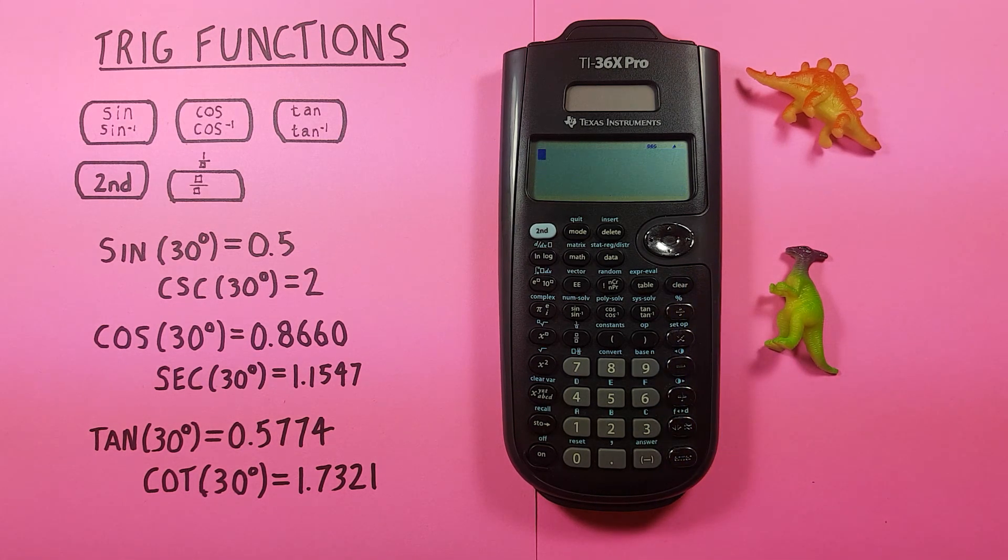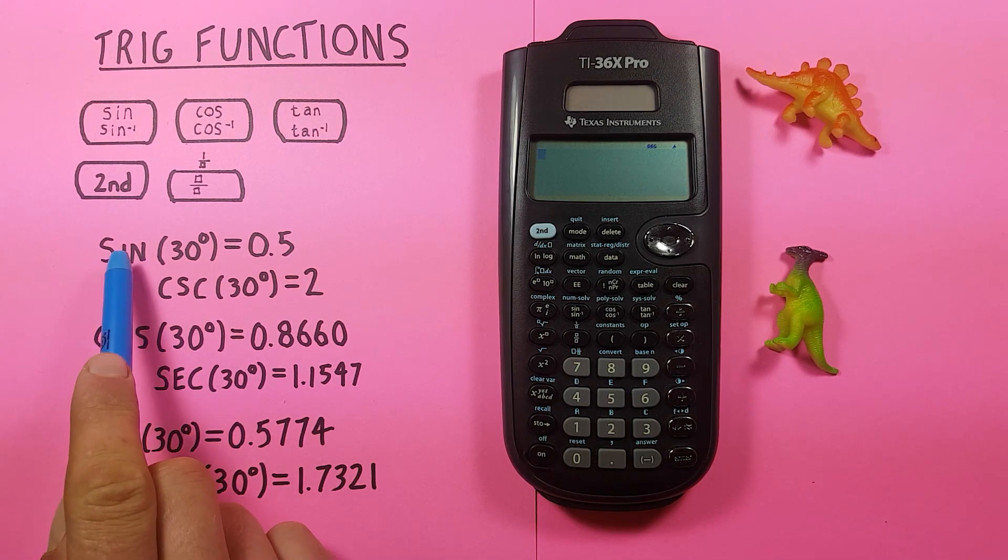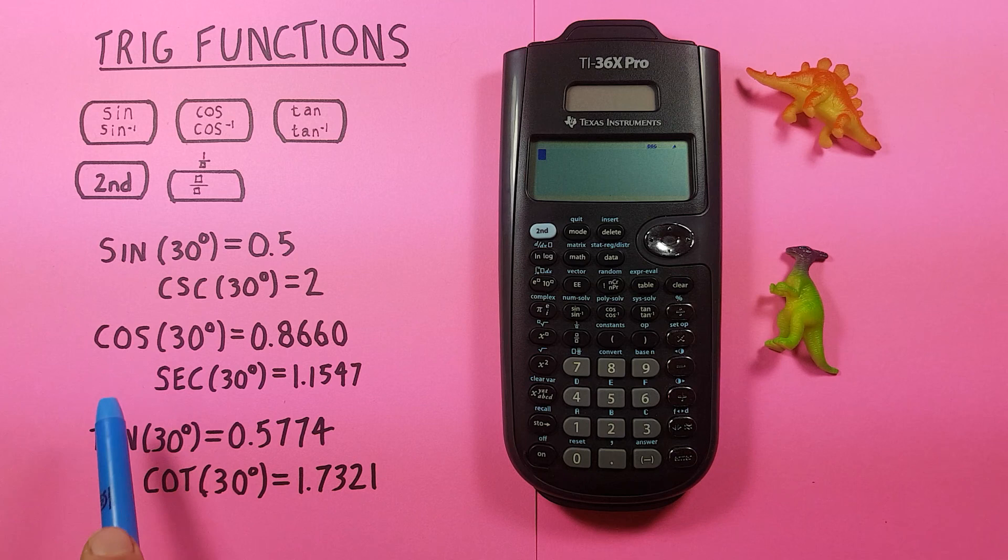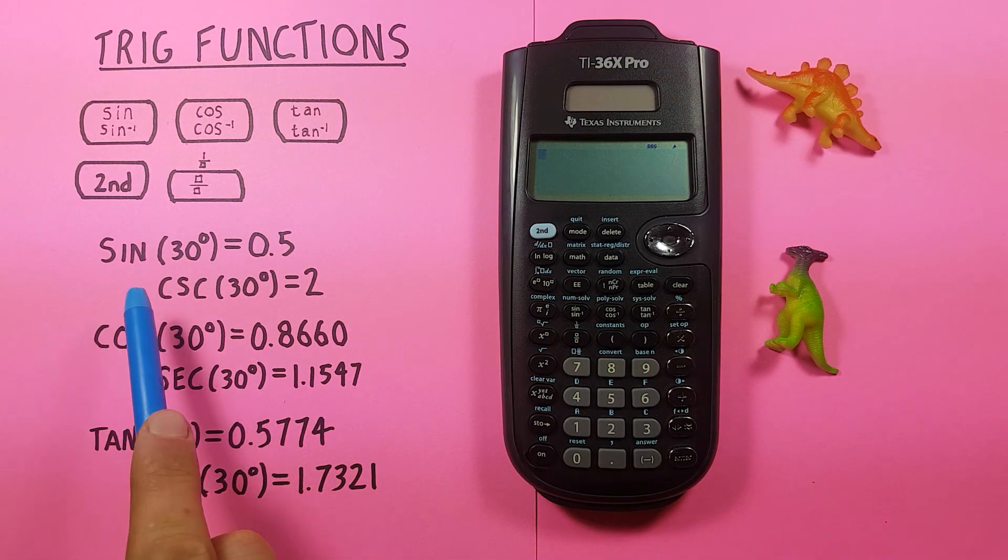Alright, those are the basic sine, cosine, and tan functions. You can also do cosecant, secant, and cotangent with this calculator. To do that, since there isn't an actual button for it, what you have to do is find the corresponding sine, cosine, or tan function and then inverse your result.